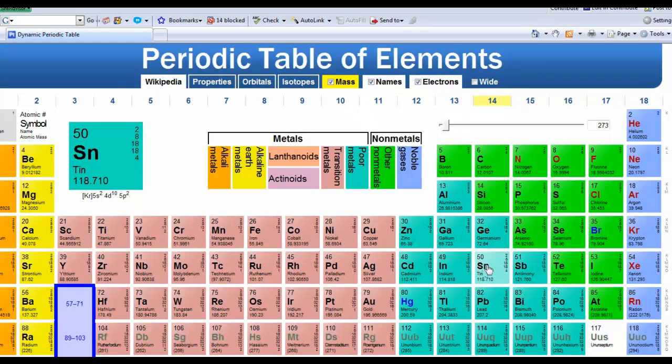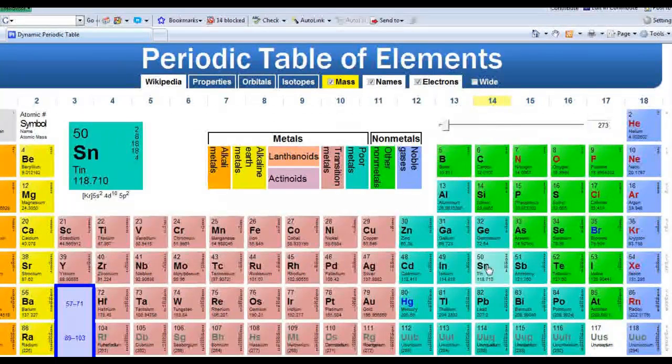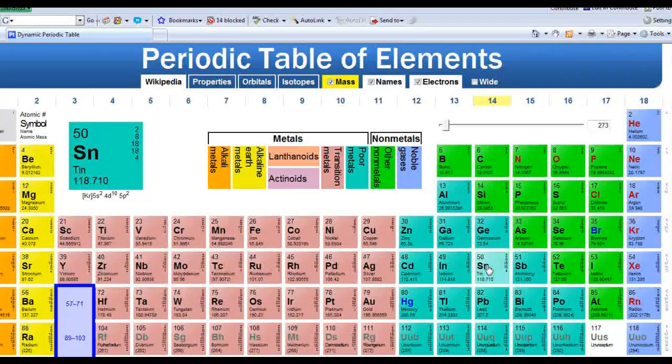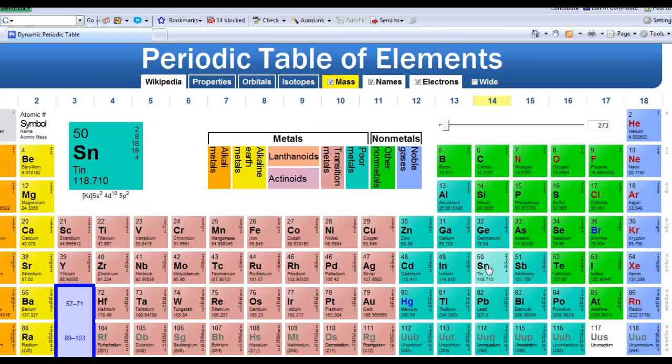Well, atomic number of 50 means it has 50 protons. Regardless of the Tin isotope, if it's Tin, whatever isotope you have of Tin, it's always going to have 50 protons. Because the number of protons, hence the atomic number, is going to identify the particular atom or the particular isotope.